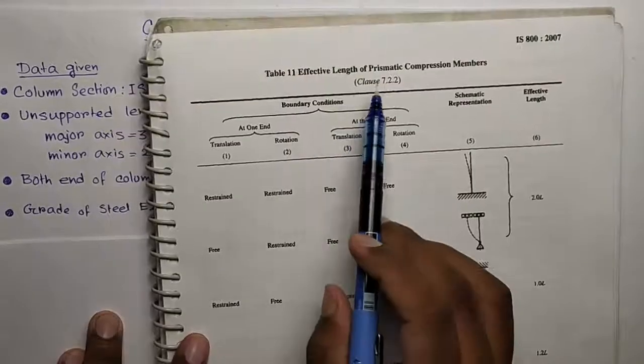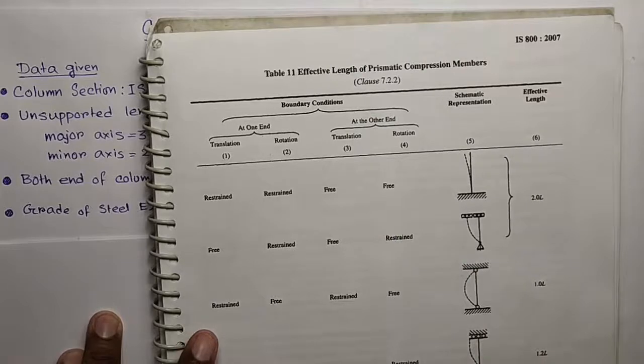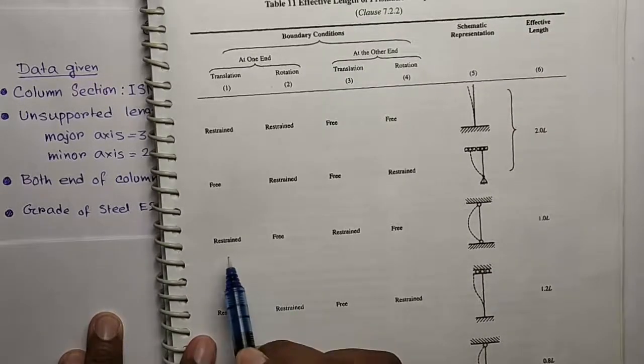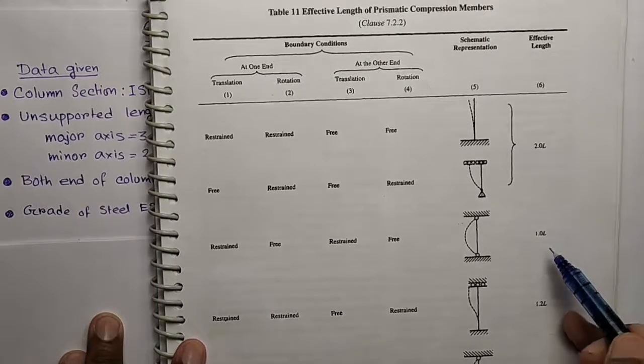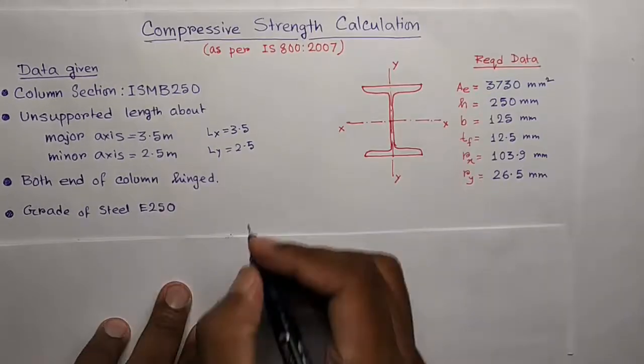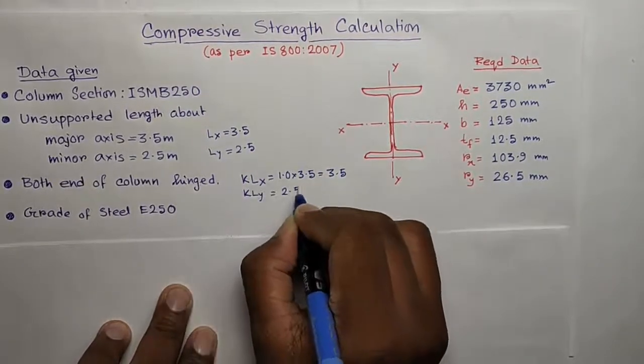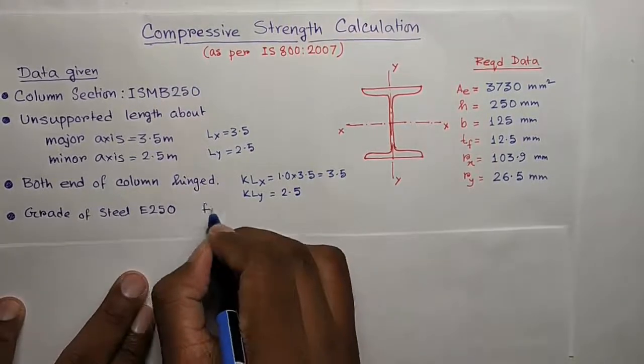This will help us determine the effective length of the column. In table 11, the effective length is given depending on the support condition. For this hinged support at both ends, you see the effective length here is 1 L.